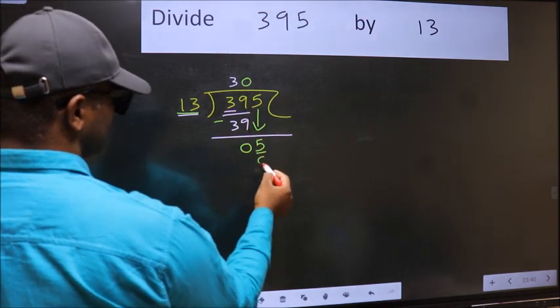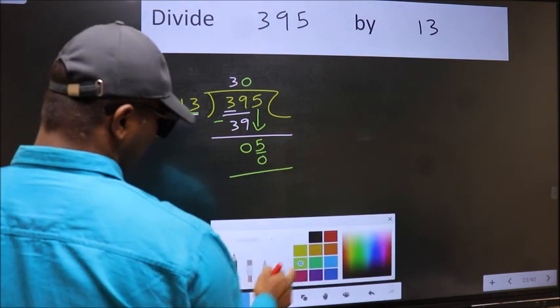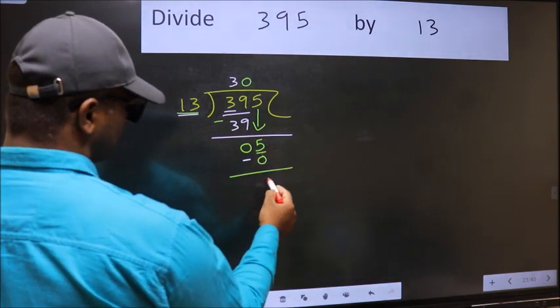13 times 0 equals 0. Now we subtract. 5 minus 0 equals 5.